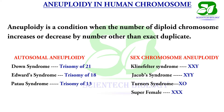Down syndrome, Edward syndrome, and Patau syndrome are some common examples of autosomal aneuploidy, whereas Klinefelter syndrome, Jacob syndrome, and Turner syndrome are some common examples of sex chromosome aneuploidy. Now let's see each disorder in brief.